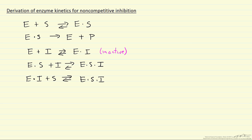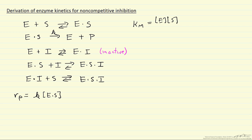We're going to use the idea of a rate-determining step, and say that the rate of product formation is the rate constant for that second step times the concentration of the enzyme-substrate complex. The other steps are all in equilibrium. We'll write the equilibrium expression for the reverse step, which gives us a dissociation constant — the enzyme-substrate complex dissociating — equal to the concentration of enzyme times the concentration of substrate divided by the concentration of the complex.